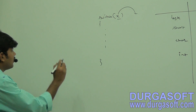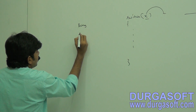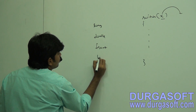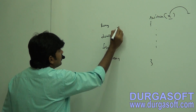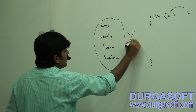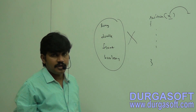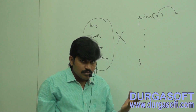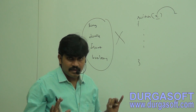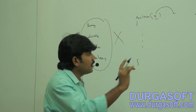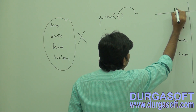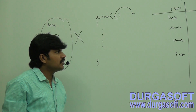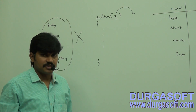If we consider long, double, float, or boolean — those are not allowed. The only allowed types for the switch argument are byte, short, char, and int. But this rule is applicable only until Java 1.4 version.